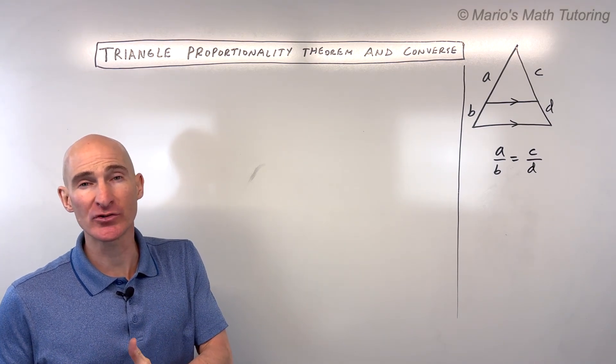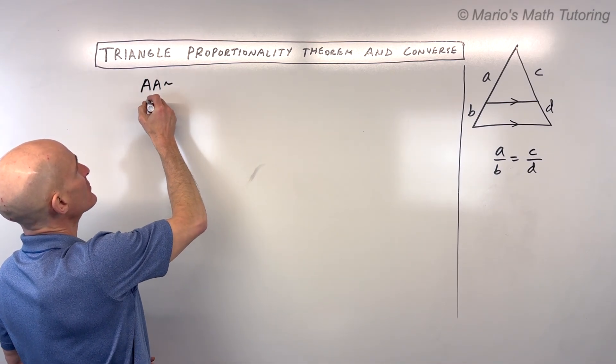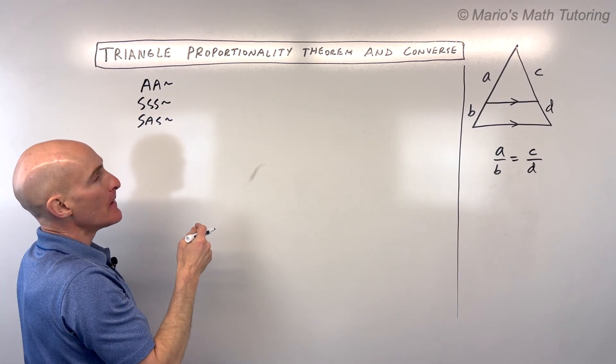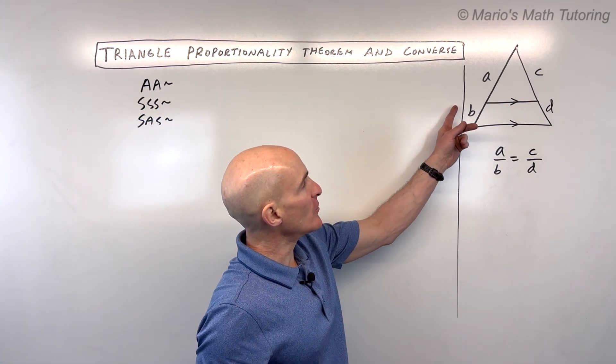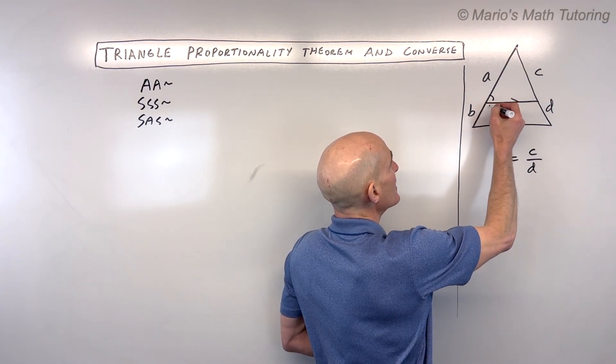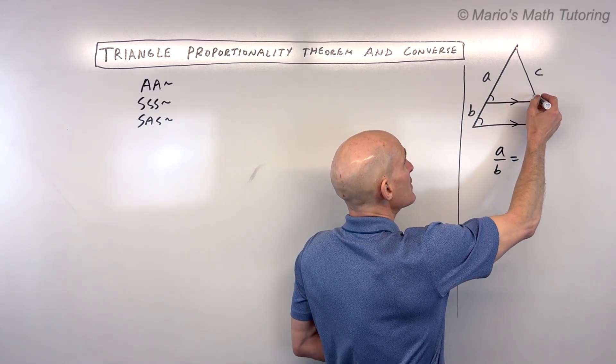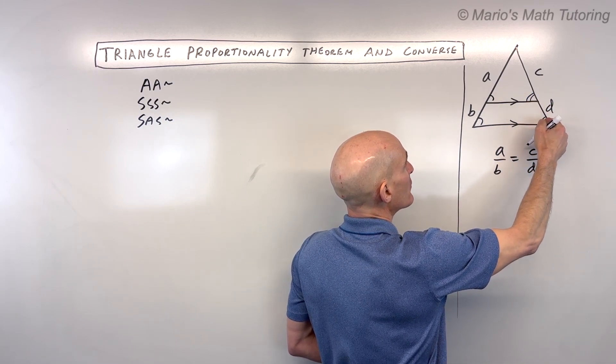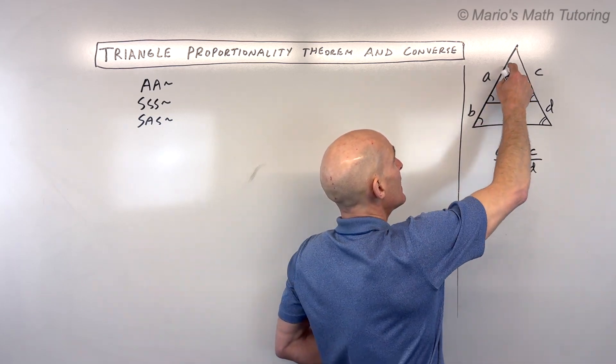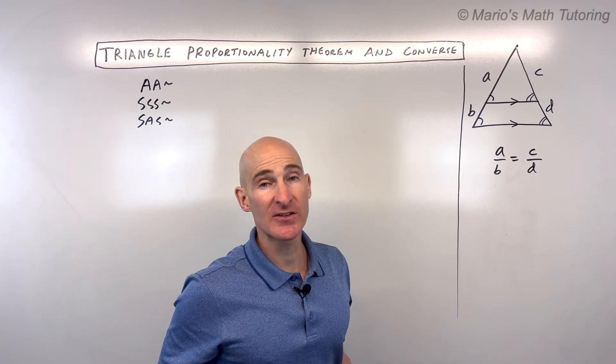Remember, there's three different ways: angle-angle similarity, side-side-side similarity, and side-angle-side similarity. Well, remember from geometry, when you draw this line parallel to the base, these angles right here are what we call corresponding angles and they're going to be congruent. Same thing here, these two angles are corresponding. You could also see that this angle in the little triangle is congruent to this angle in the big triangle by the reflexive property.